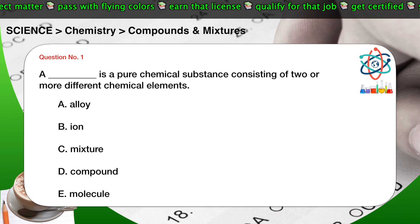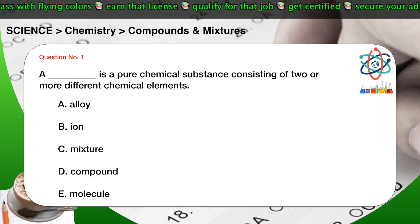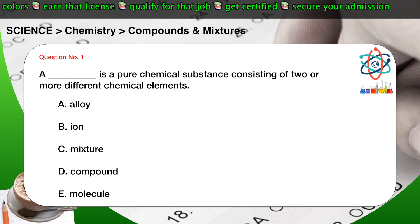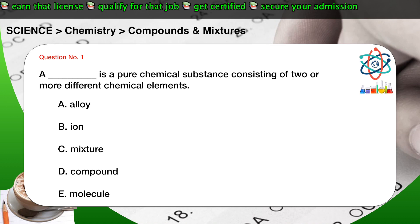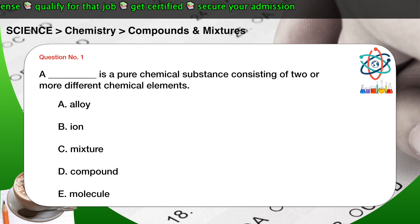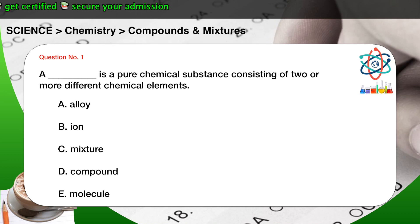Question number 1. A blank is a pure chemical substance consisting of two or more different chemical elements. A. Alloy. B. Ion. C. Mixture. D. Compound. E. Molecule.